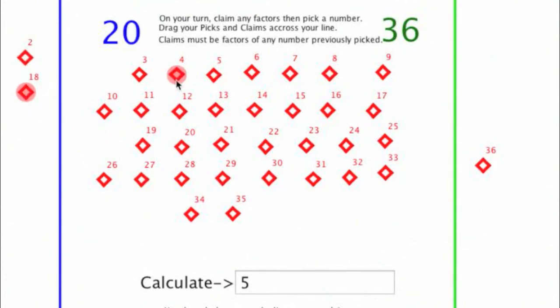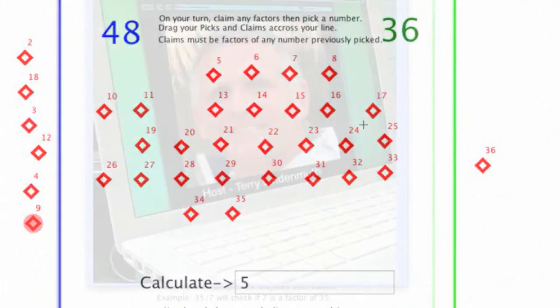2 goes into 36 18 times, so they got those two claims. 3 goes into 36 12 times, they have those two claims. 4 goes into 36 9 times, they have those two claims. And so basically, when you look at this, the claiming ended up being larger than the actual pick of 36. So I wouldn't start out with picking 36.